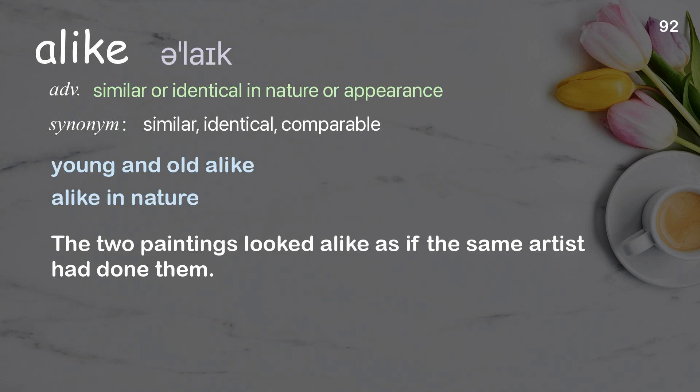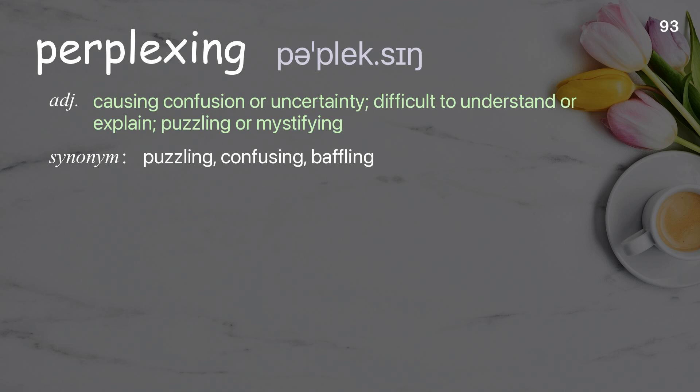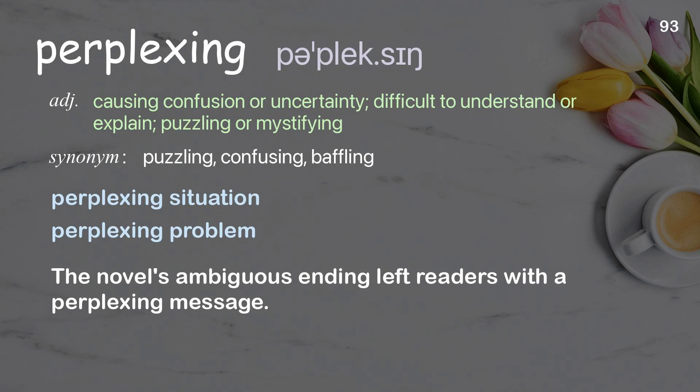Perplexing: causing confusion or uncertainty; difficult to understand or explain; puzzling or mystifying. Examples: perplexing situation, perplexing problem. The novel's ambiguous ending left readers with a perplexing message.